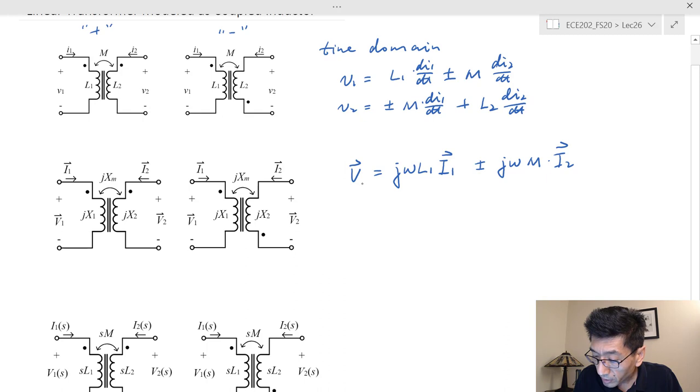And V2 is going to be equal plus or minus jωM times I1 plus jωL2 times I2.